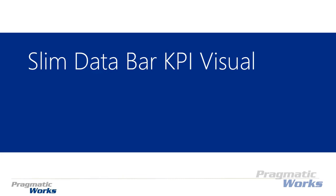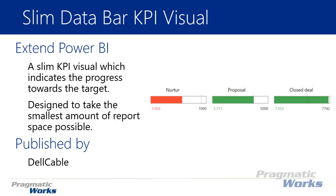Welcome back to the Power BI custom visuals course. In this module we're going to be looking at the Slim Data Bar KPI visual. This custom visual is designed to take up the smallest amount of space possible on your report. It shows a KPI value indicating how close you are to a target value, so you need an actual value, a target, and ideally a maximum value to control how large the indicator displays.